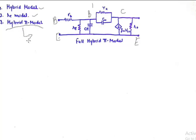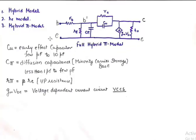However, this model can also be reduced to a low frequency approximate model. Now let's look at some of the component values here. Cu which we know is the capacitance across the terminal B dash and C. It is better known as early effect capacitor and its typical value is from few pF to tens of pF. And C pi which is the capacitance between the virtual base terminal to emitter is also known as diffusion capacitance and it is largely because of the minority carrier storage at base and its value is less than one pF to few pF.